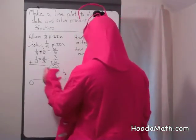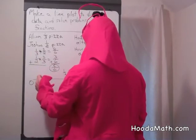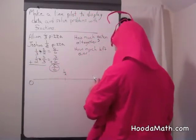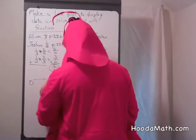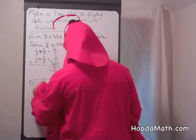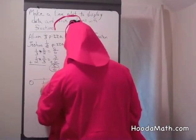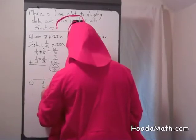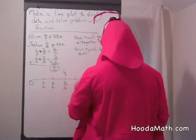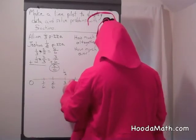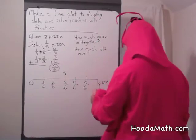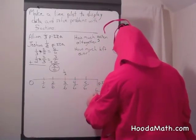We can divide half into sixths. In fact, we can divide all of this into sixths. That would be 1 sixth, 2 sixths, 3 sixths — and we continue — 4 sixths, 5 sixths, and one whole pizza would be 6 sixths.